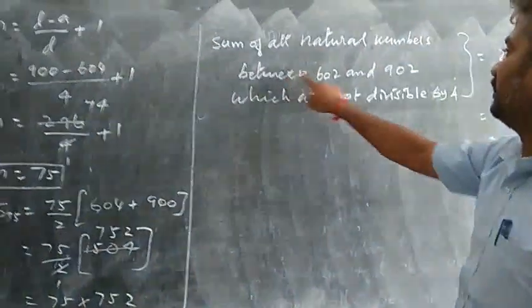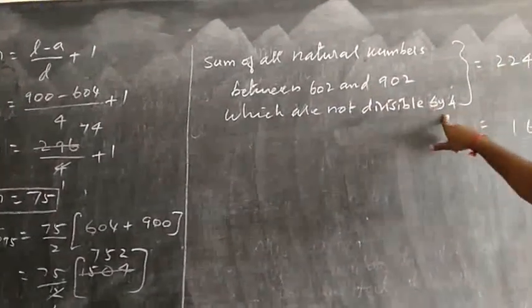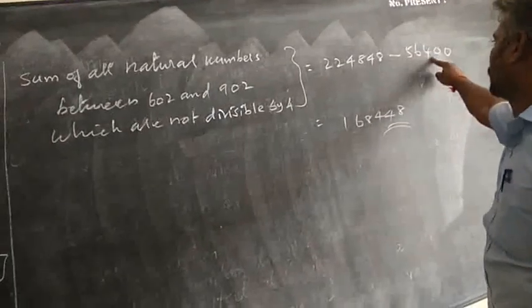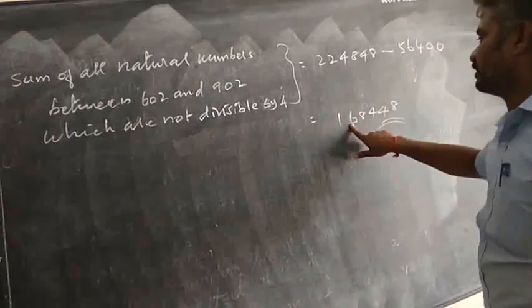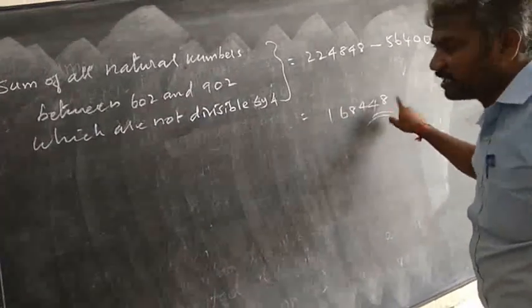Now sum of all natural numbers which are not divisible by 4. First value 224,848 minus 56,400. This subtraction means 168,448.